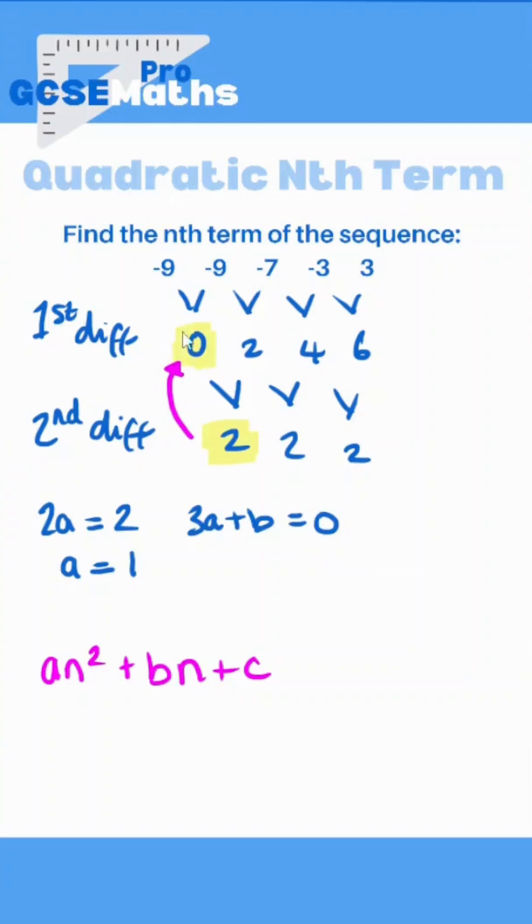I can jump up. The first difference on the left should always equal 3a plus b. Because we already know that a is 1, we can substitute that in and work out what b is. In this case, b is minus 3.